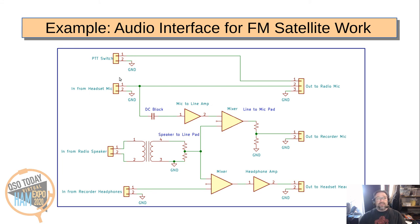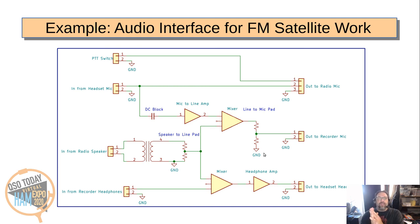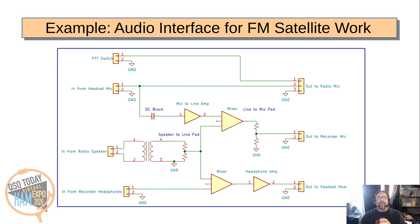That's pretty much it. The recorder input gets a sum of the headset microphone and the radio speaker output. The headset gets a sum of the recorder output and the radio speaker. The radio microphone gets only the headset microphone — we never want to send recorder audio or anything else to the radio. And PTT is passed through. This shows how simple building blocks can be combined in a somewhat complex way to create a component with multiple inputs and outputs routed exactly as we want.